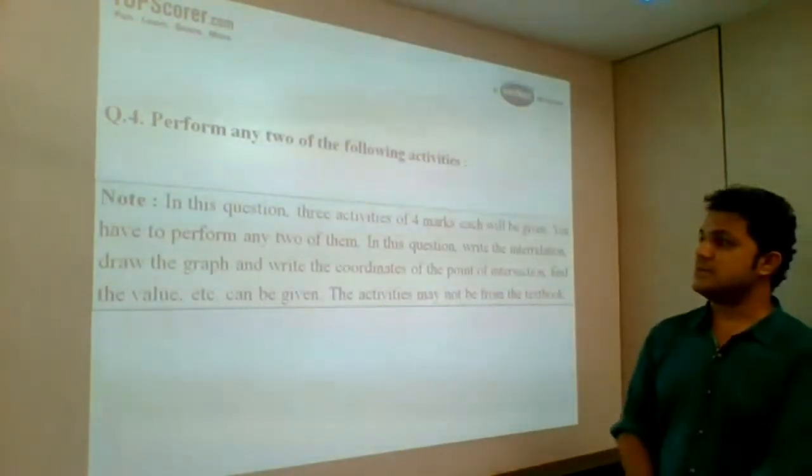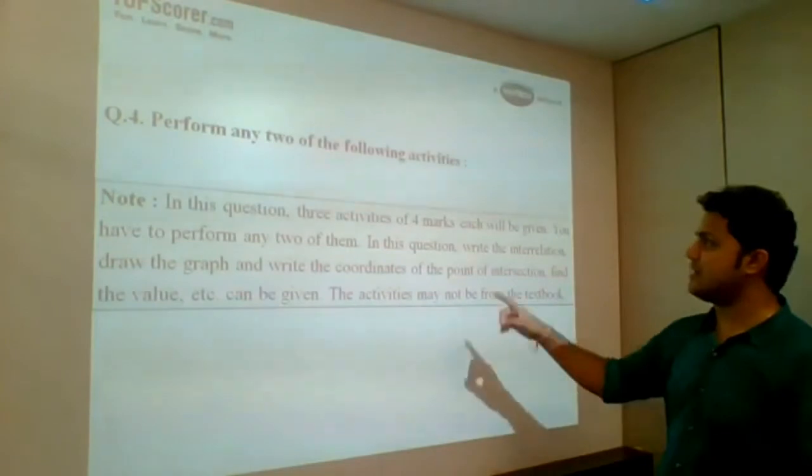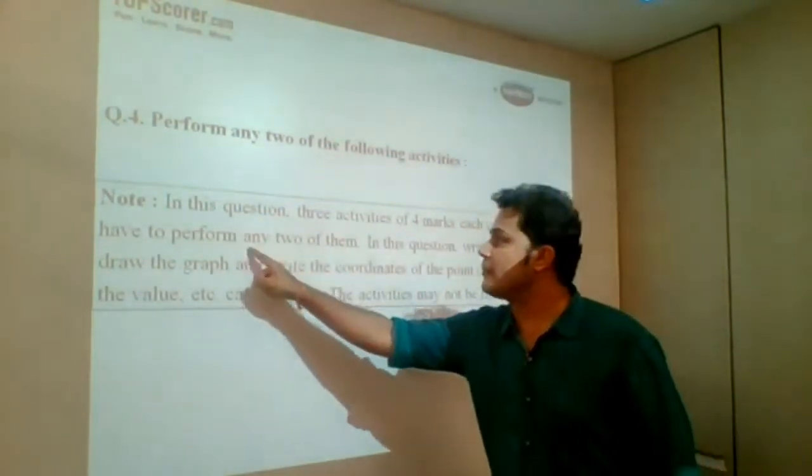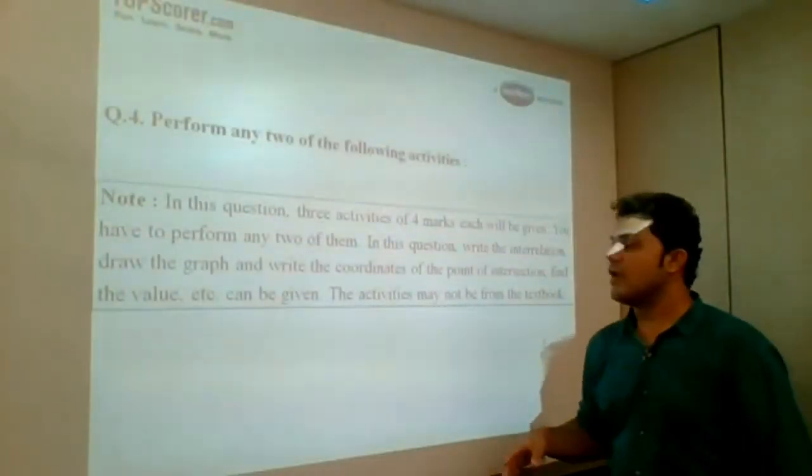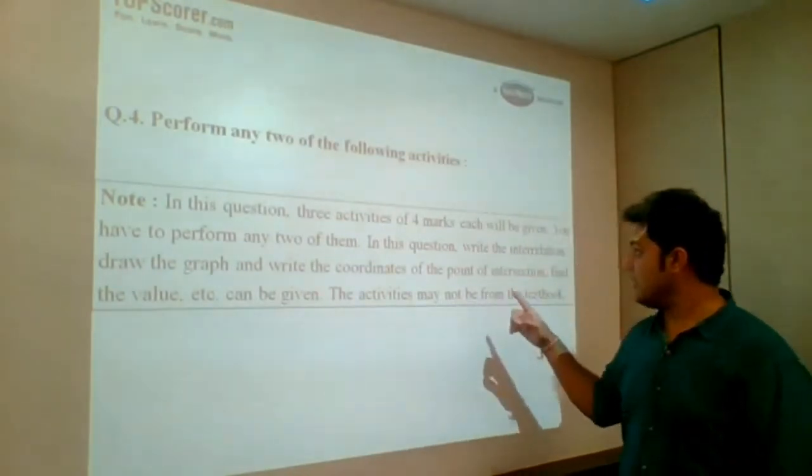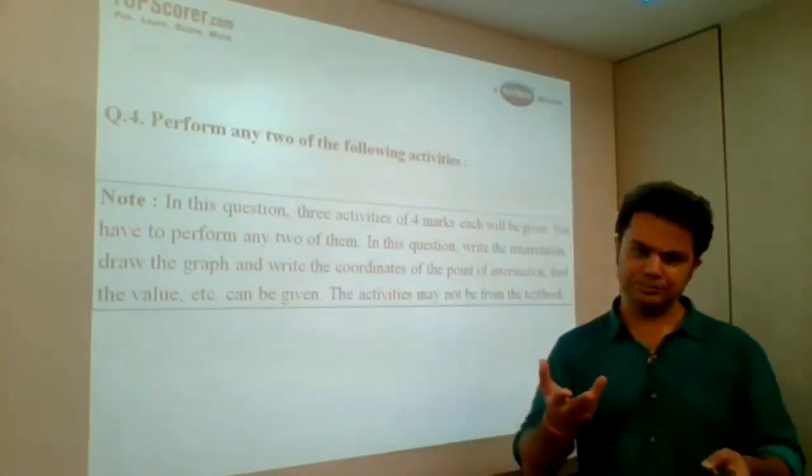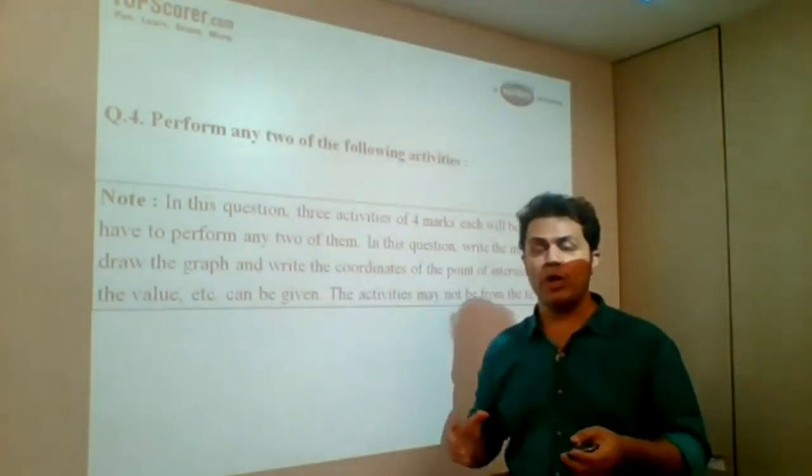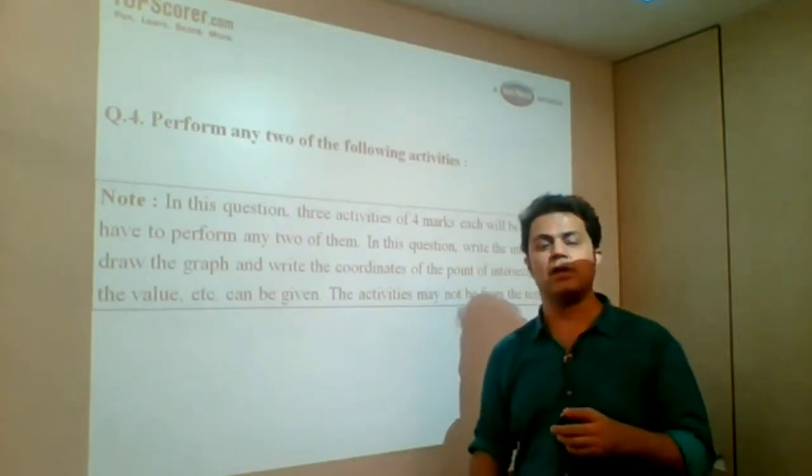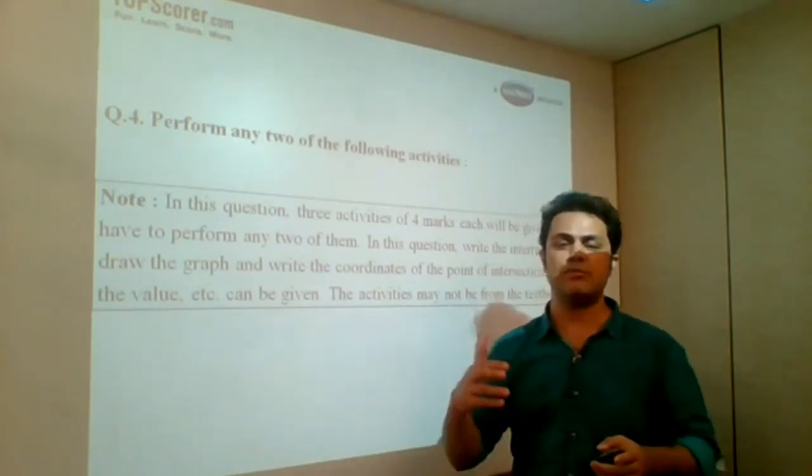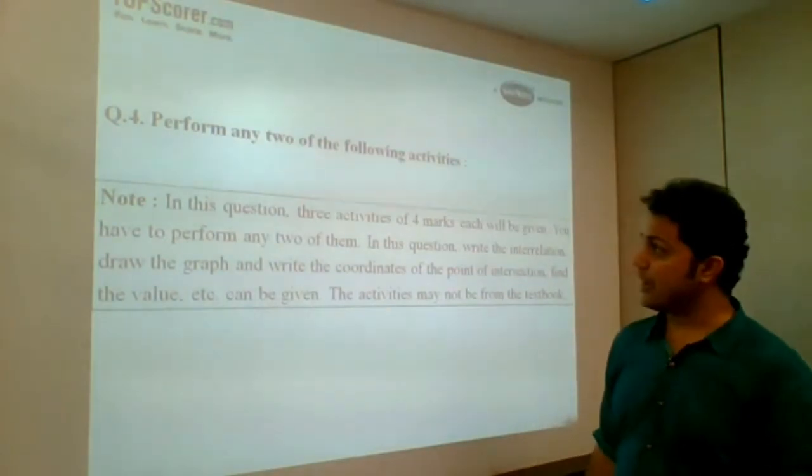Now, perform any two of the following activities. Each question will be for 4 marks. In this question, 3 activities of 4 marks each will be given. You have to perform any two of them. In this question, write the interrelation, draw the graph, write the coordinates of the points of intersection, find the value, etc. Everything will be given. Activities may not be from the textbook. That is, question number 1, 2, 3, you will find a lot of questions coming from the textbook. But when it comes to question number 4, there are fair chances that you may have concept-based questions. Whatever you have studied with your 9th standard curriculum, but the questions may not be in the textbook. There can be some questions based on the same concept, but from any other source.